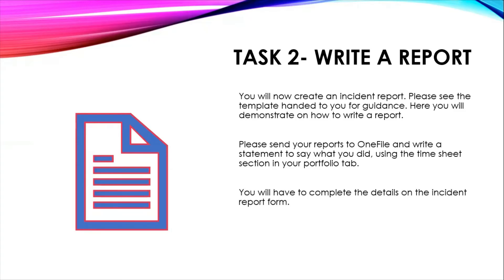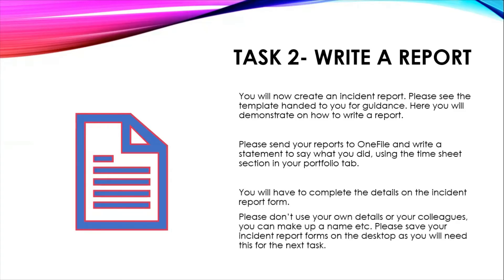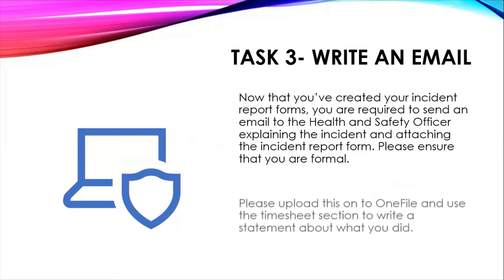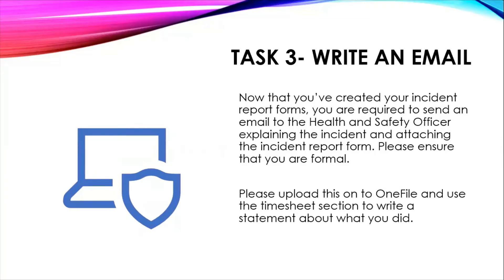You will have to complete the details on the incident form. Please do not use your own details or your colleagues' details — you can make up a name. Please save your incident report forms as you will need them for the next task. Task three is to write an email. Now that you have created your incident report form, you are required to send an email to the health and safety officer. This email will have you explain the incident and attach the incident report form. Please ensure that you are using a formal format for your email, and upload this onto OneFile using the timesheet section to write a statement about what you did.